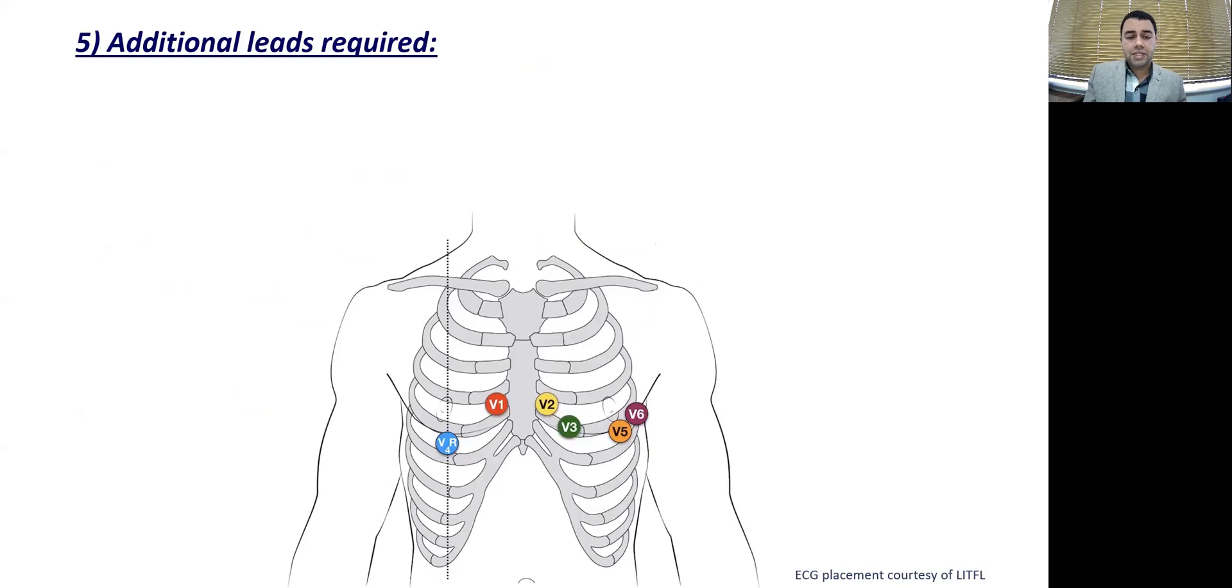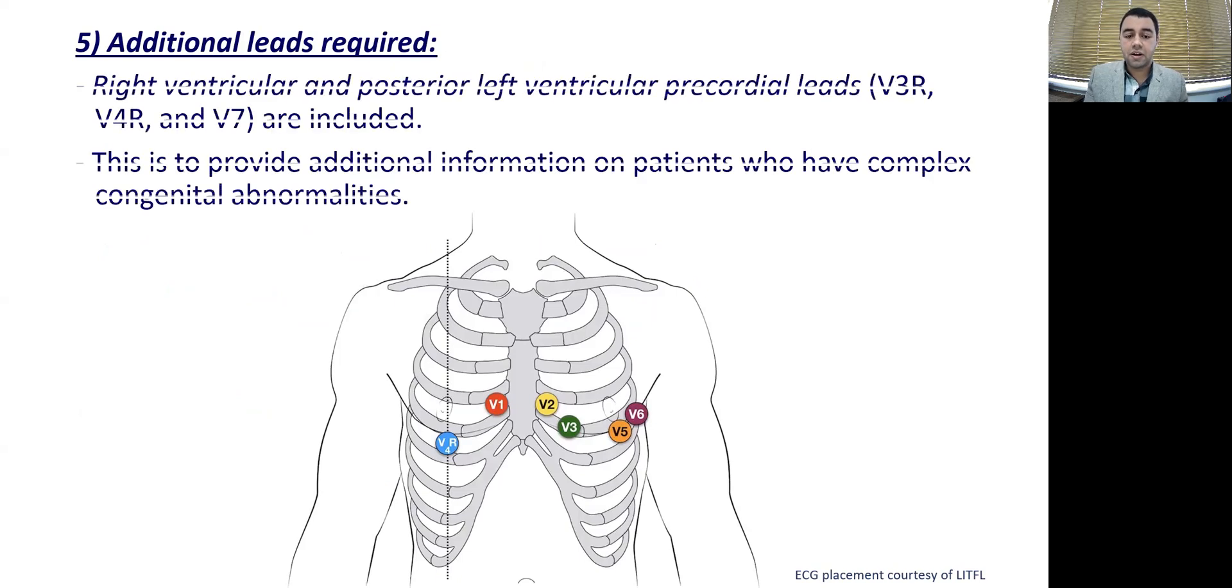Moving on with pediatric ECGs, you need to get a bit more leads. You need to cover the right side of the heart and you need to cover the posterior wall of the heart. And that is to help you with covering the congenital problems.